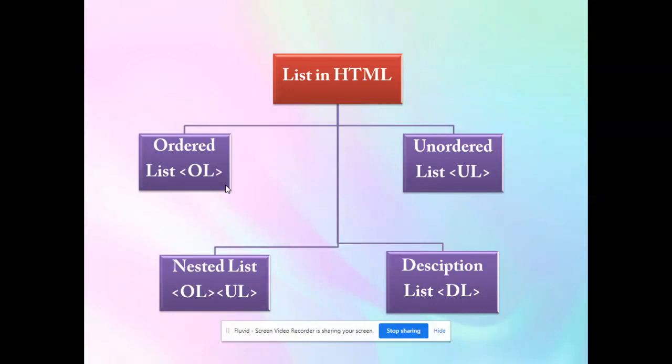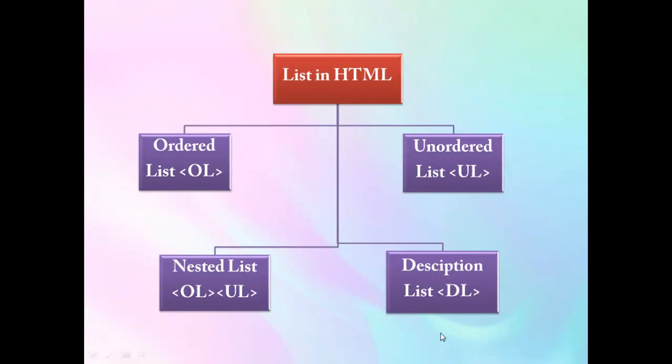Nested list is a combination of both ordered and unordered lists. Nested means a list within a list, in which we can use both ordered and unordered lists together. Description list is like a dictionary in which we can have a term and then the definition of that term.